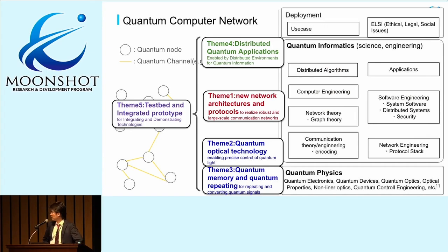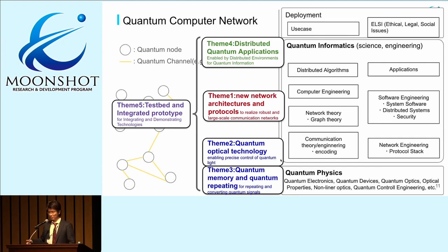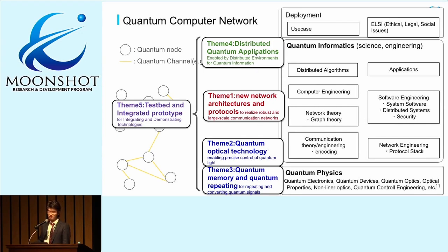We have five research themes. Two are for quantum physics: quantum optical technologies and quantum memory. There is also quantum living technologies, quantum architectures and protocols, network architecture and protocols, and distributed quantum applications. Putting all four together, we will build an integrated prototype or testbed environment.